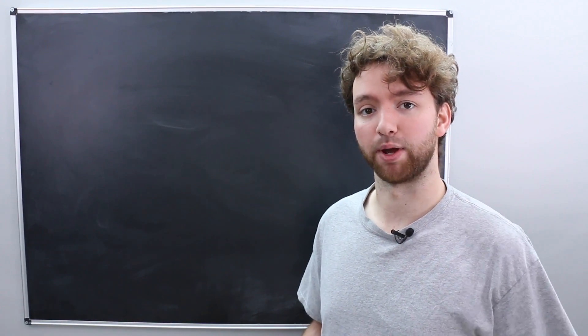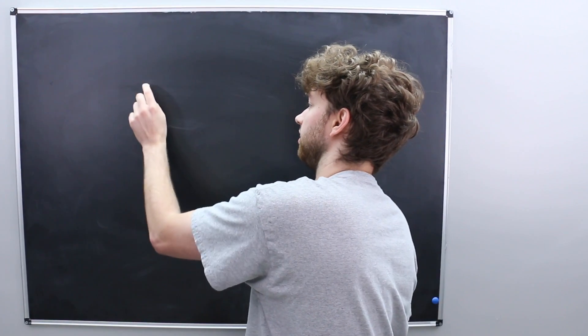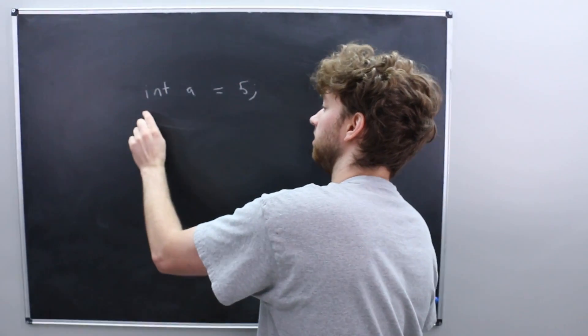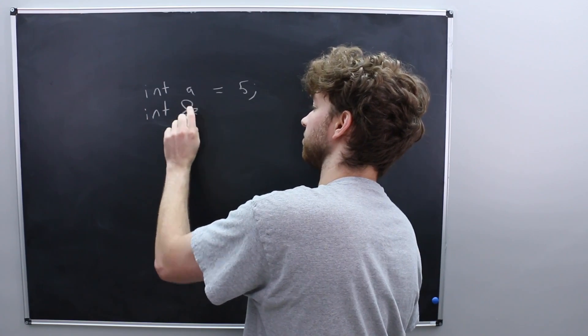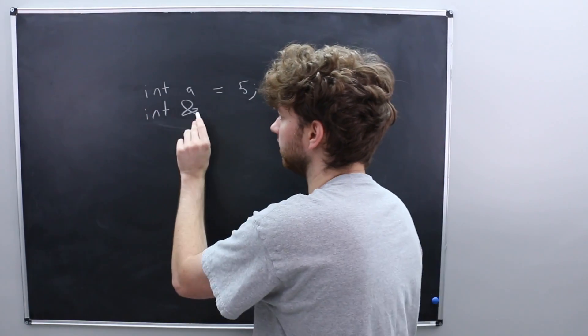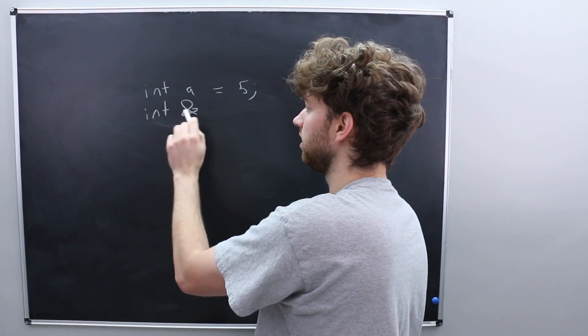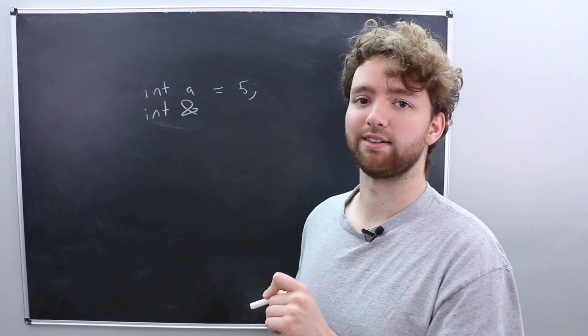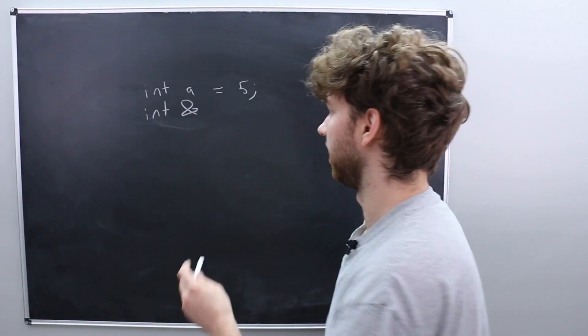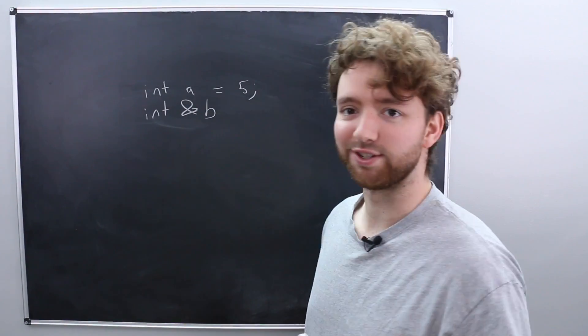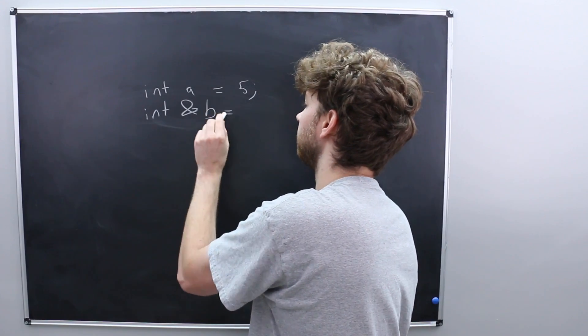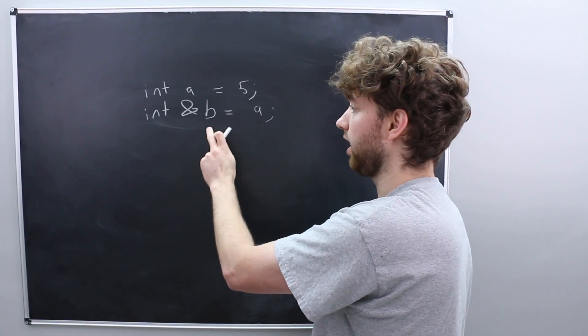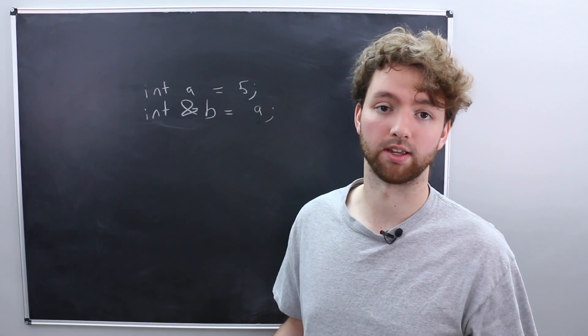When you create a reference, there's a special syntax. So like in the example we just had, we had some variable a, we assigned it a value, and then we had the reference, which had the ampersand, and that can go attached to the int. So no space between the int and the ampersand, or there can be a space there, or it can be attached to the actual variable name here. So you're going to see all three variations. And then you just assign it another variable here. So we assign it a, and now these both point to the same area of memory.